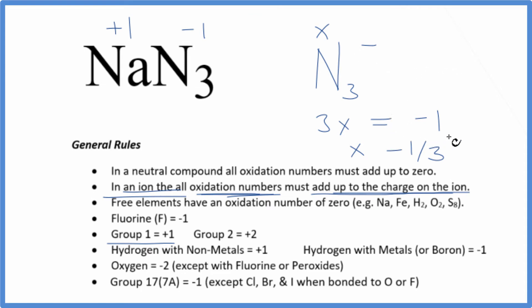It's important to note that when we find the oxidation number for each nitrogen here, this -1/3 is an average oxidation number across each nitrogen. We're looking at the average oxidation numbers for these three nitrogens in the azide ion.